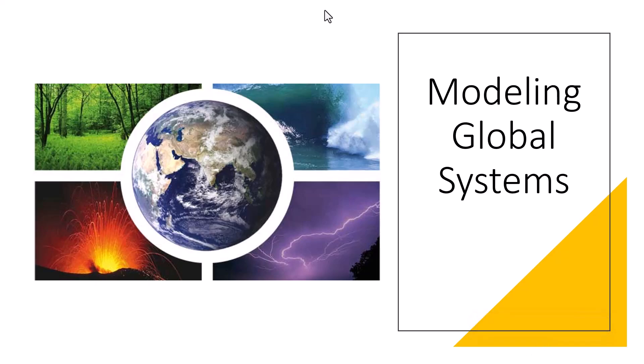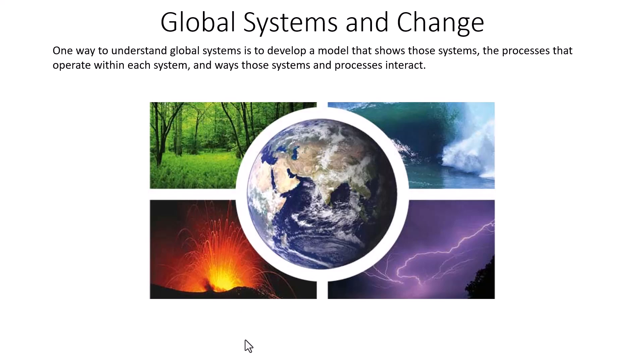Hey guys, Mr. Pete here. In this video we're going to talk about modeling global systems — how are these global systems modeled, what are the global systems, how do they interact with each other, and what influence do they have on each other? This is going to be a short video; we'll dive in, talk about what these global systems are, and then move on. These global systems are not stagnant — they do change, and quite a bit.